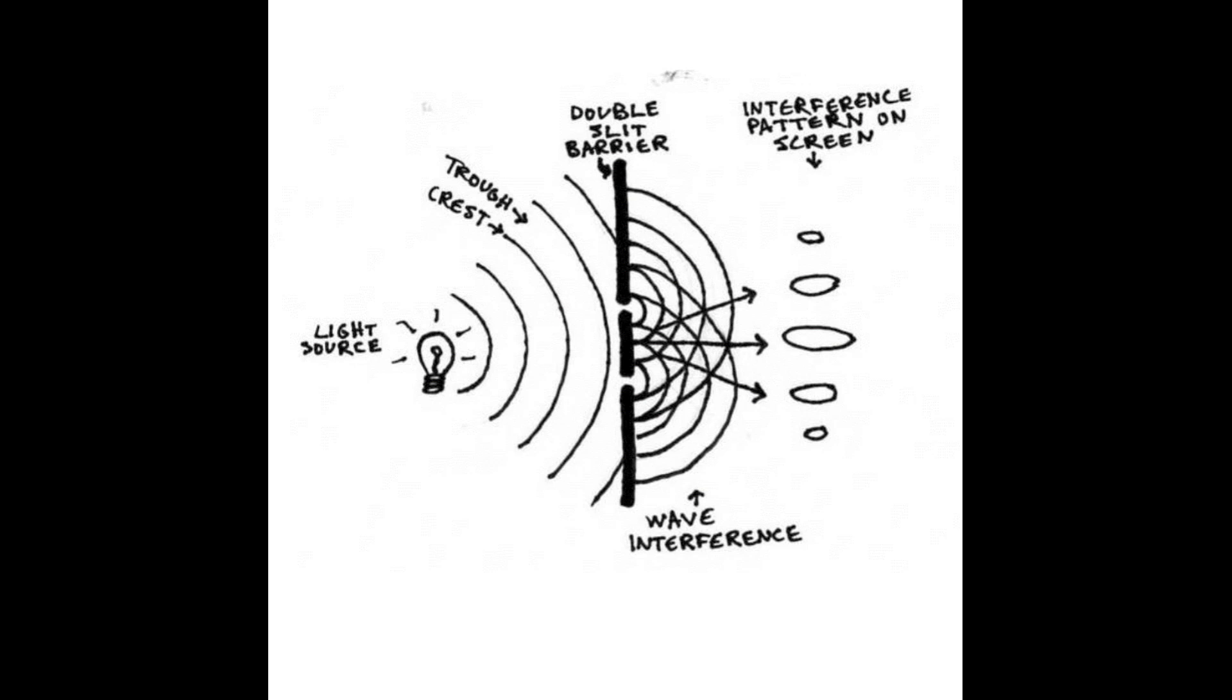The peculiar behavior observed in the double-slit experiment, in which the brightest part of the light appears just behind the blocked area between the slits, highlights the interference of waves. This phenomenon is a direct result of constructive and destructive interference patterns created by the crests and troughs of light waves, and these either reinforce or cancel each other out.